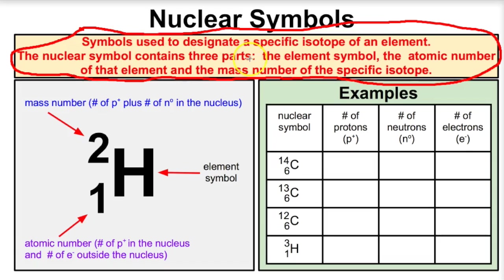The nuclear symbol contains three parts: it contains the element symbol or the chemical symbol, the atomic number of that element, and the mass number of the specific isotope for that element. So let's take a look at an example.